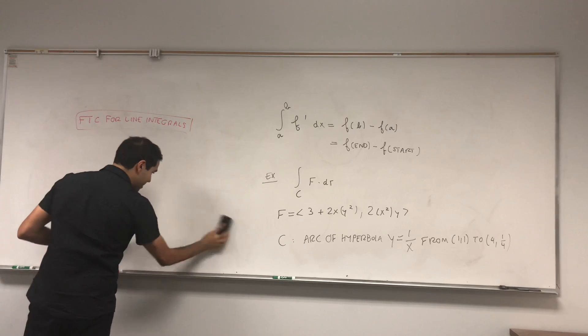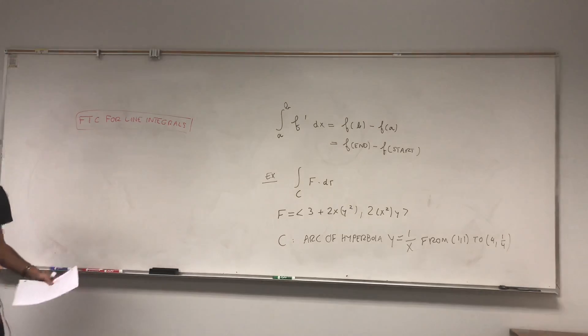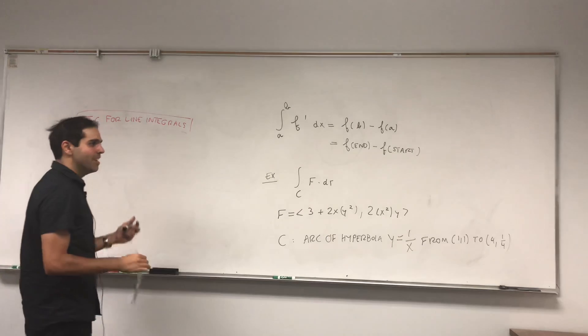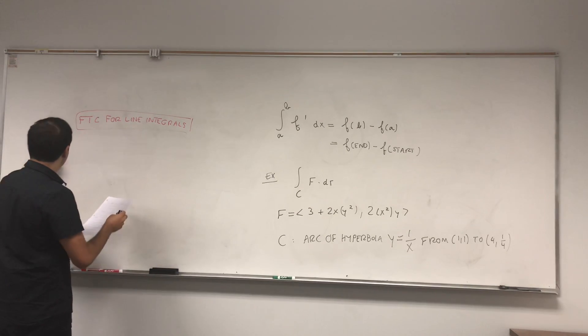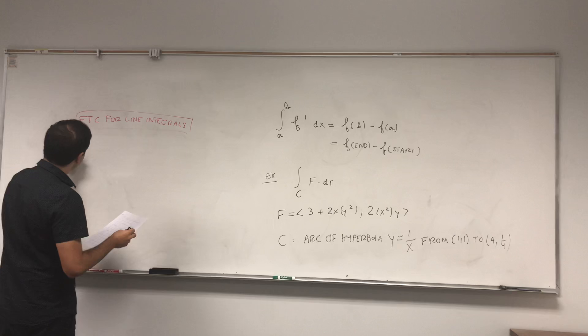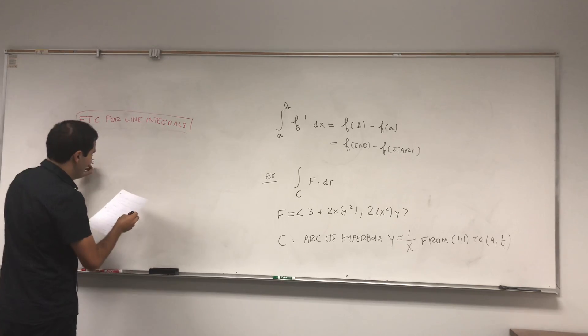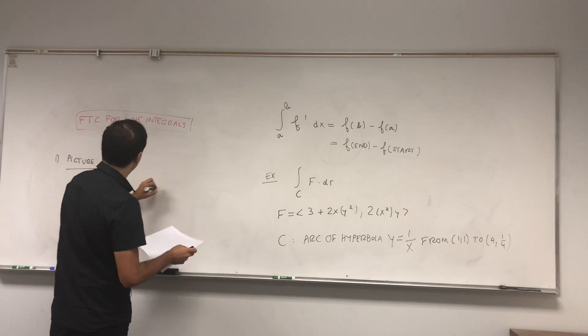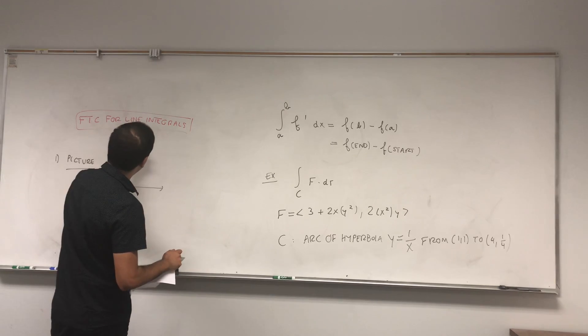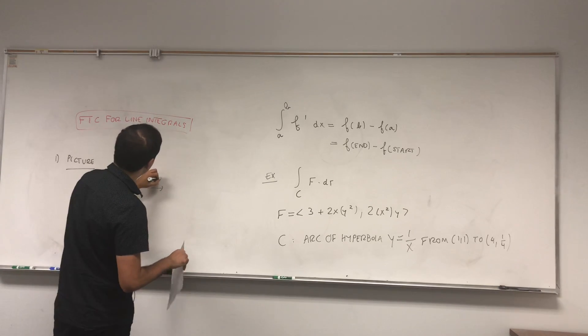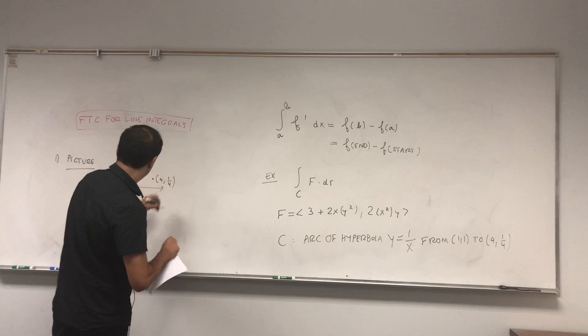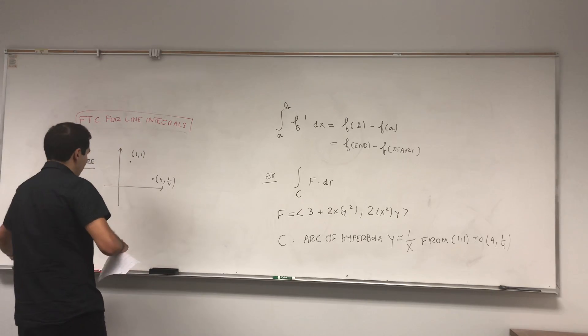And careful again, this technique doesn't always work, but if it works, if F has an antiderivative, in other words if it's conservative. So as usual, let's draw a picture. You have this arc of hyperbola from 1,1 to 4, 1 quarter.